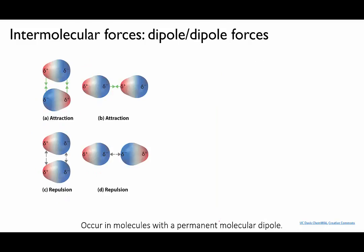First, let's look at dipole-dipole attractions. These occur in molecules with an overall molecular dipole, a slightly positive end and a slightly negative end. In this picture here from the UC Davis Chem Wiki, these little diagrams represent HCl molecules. When the molecules encounter each other, the positive end of one molecule can attract the negative end of another.